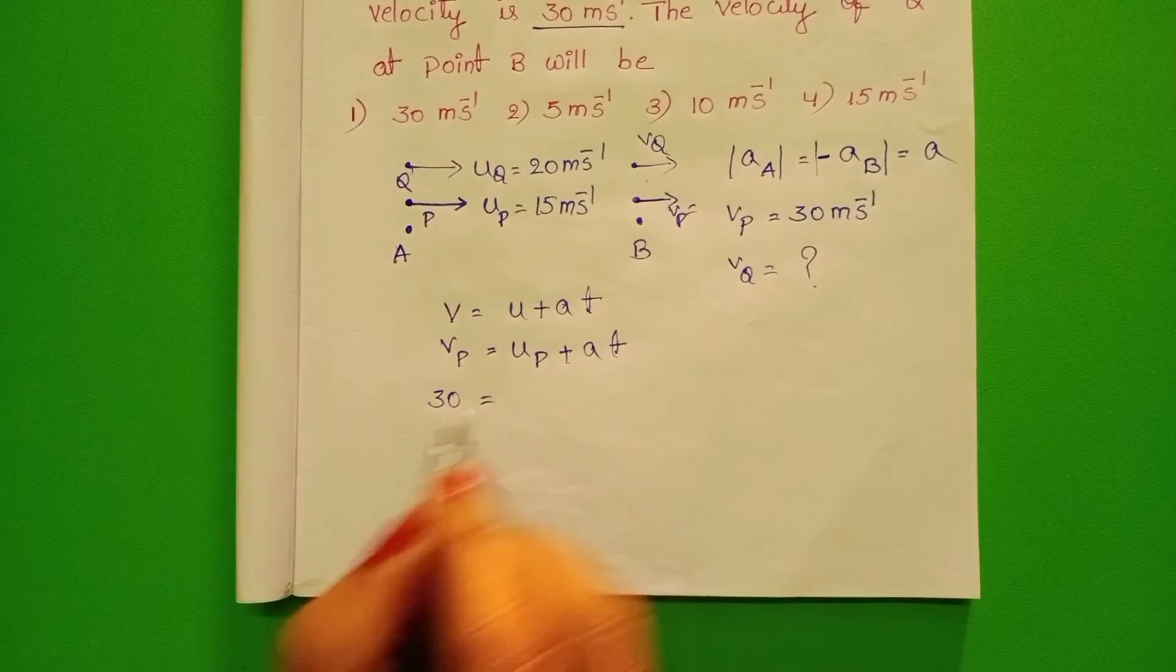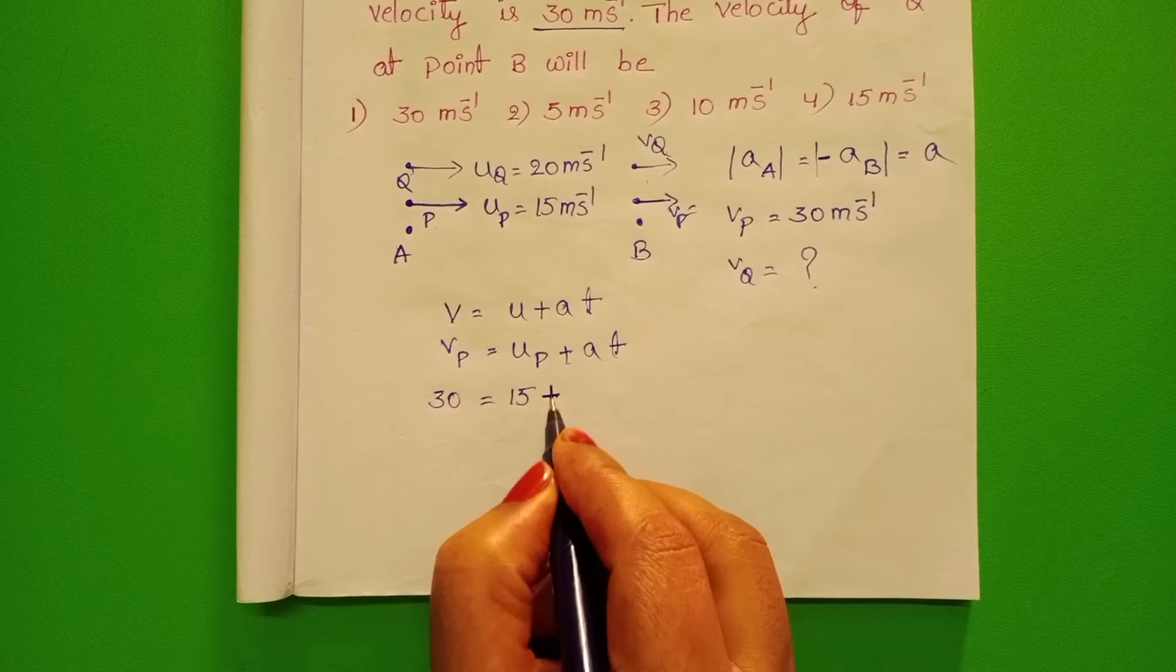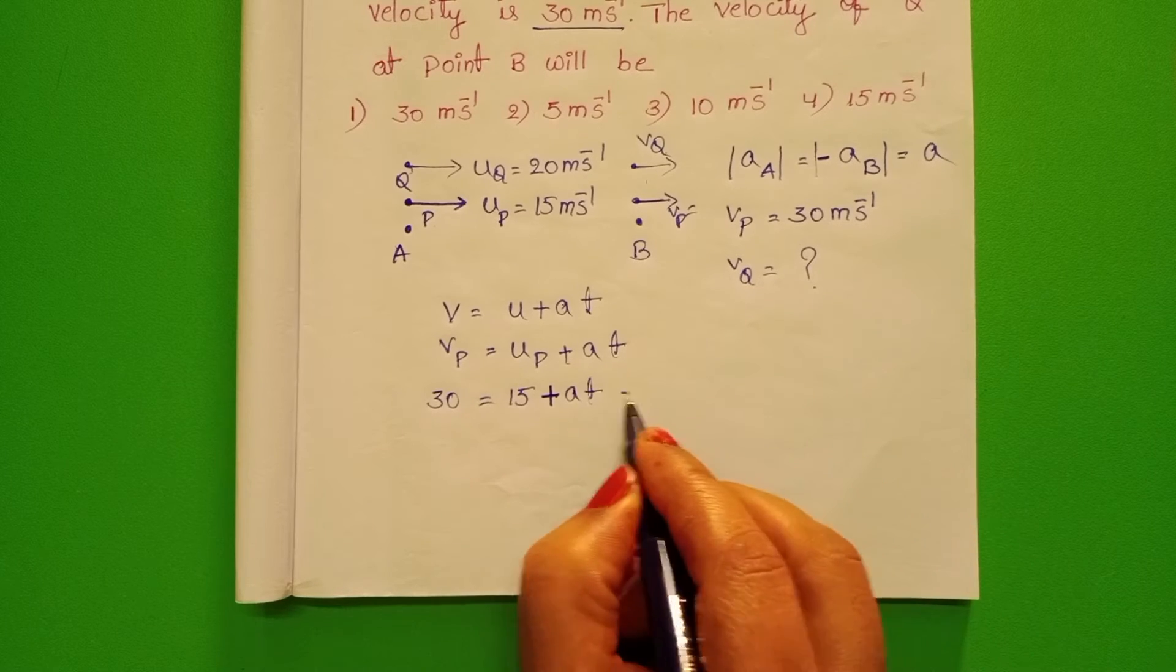Substitute the values here. 30, initial velocity is 15, take acceleration with positive sign and time is T. Equation 1.